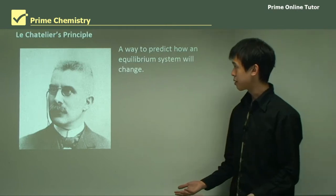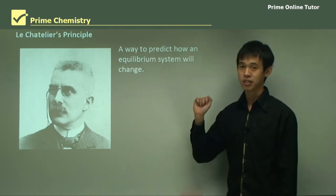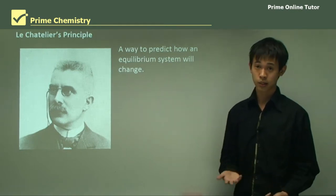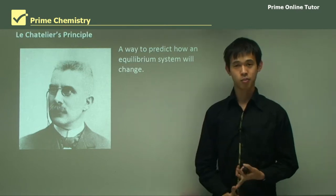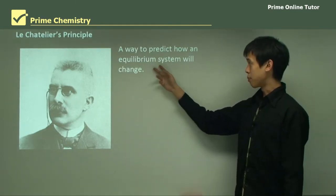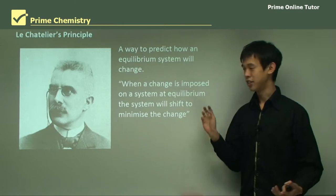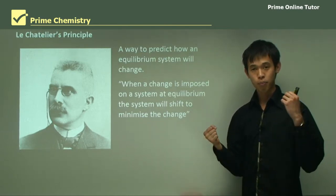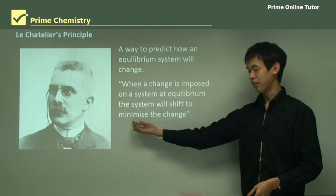We have to look again at Le Chatelier's principle, remembering that he developed our knowledge of equilibrium. His principle comes up in economics with supply and demand, and in physics with Lenz's law. His principle is essentially a way to predict how an equilibrium system will adapt to a change. When a change is imposed on a system at equilibrium, that system will shift to minimise that change — it will alter so that it tries to resist that change as much as possible.